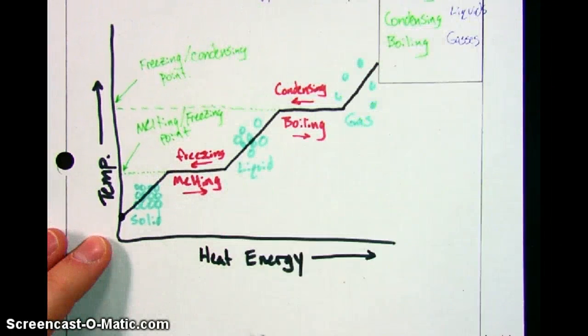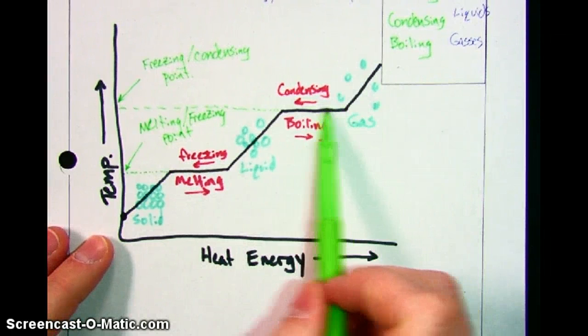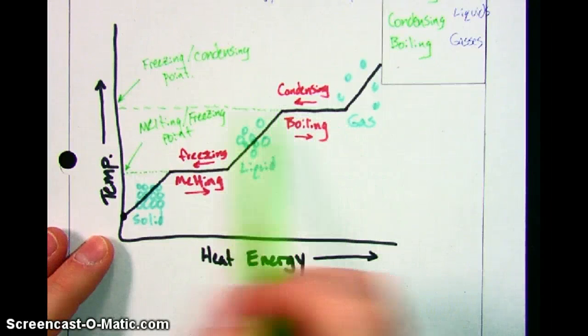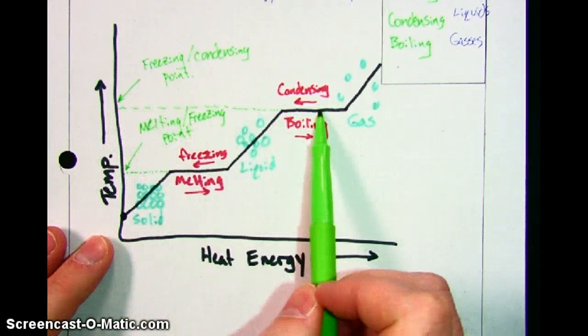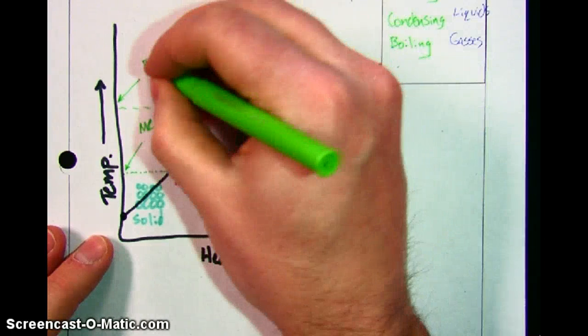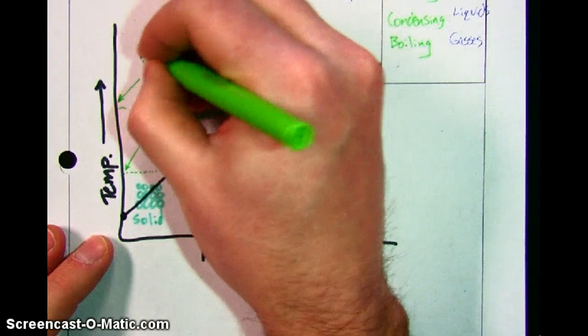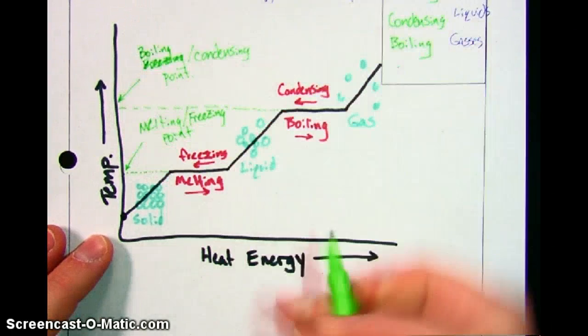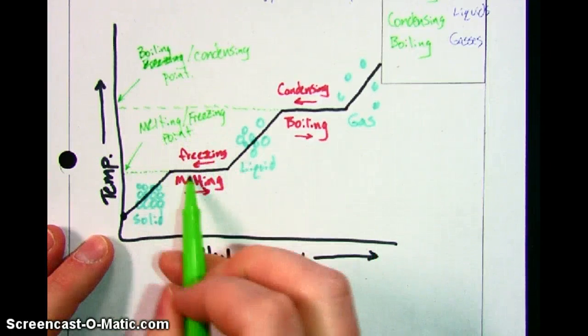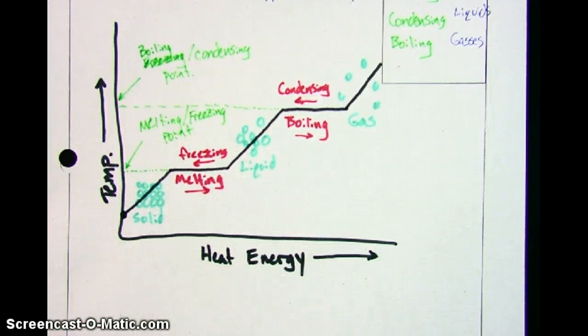So looking at one of these graphs, you can tell for any given substance, based on just where the flat spots are, you can tell what the temperature is for either boiling or condensing. And same down here, melting and freezing point. Now there are a few more things to put down before I'm going to set you loose on some practice questions.